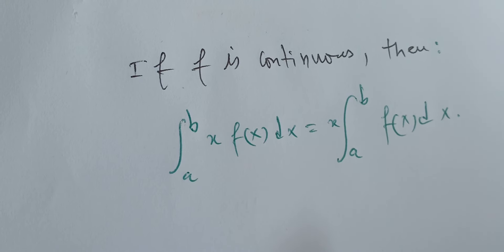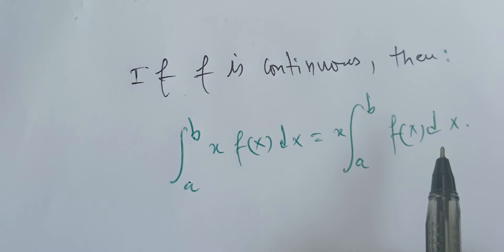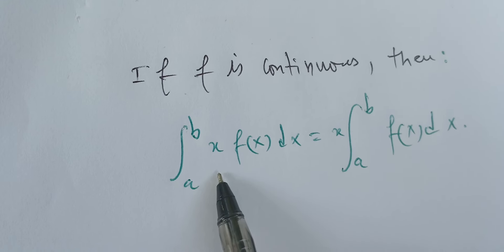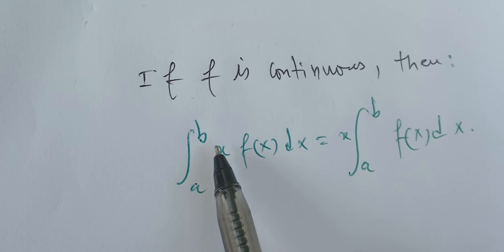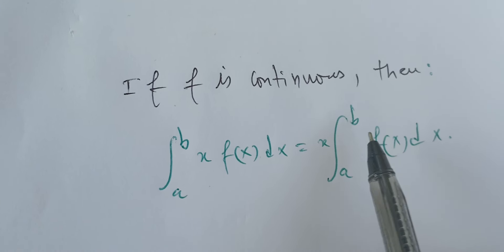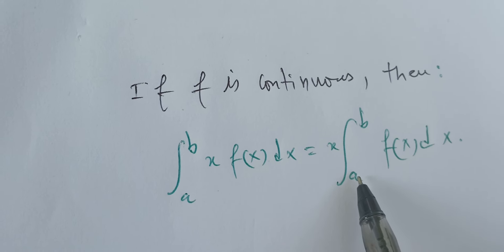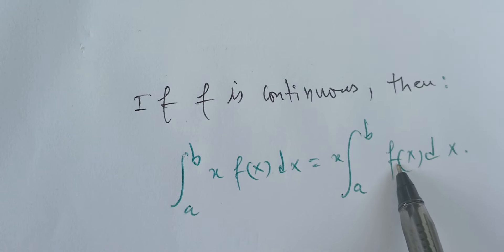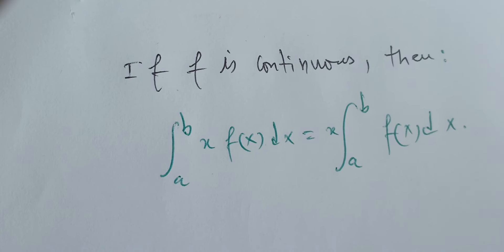Let's solve the following question: if f is continuous, then the integral between a and b of x f(x) dx is equal to x times the integral between a and b of f(x) dx. We want to prove or disprove this statement.